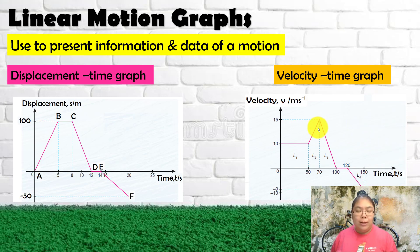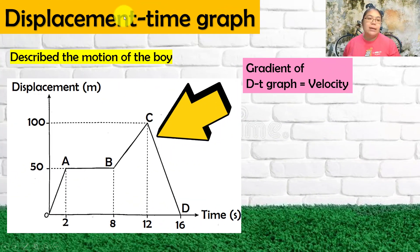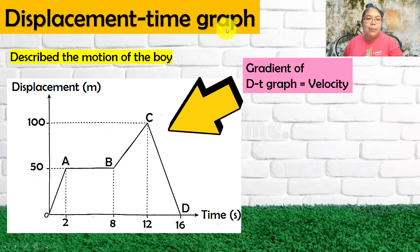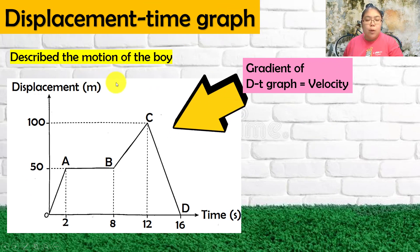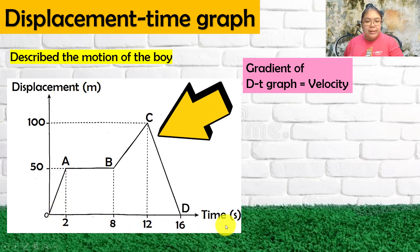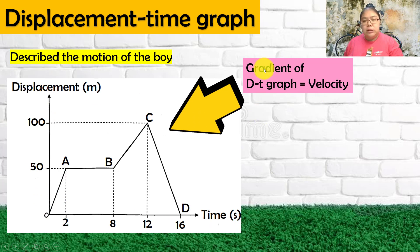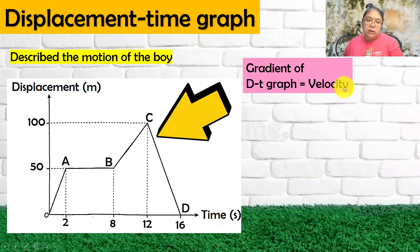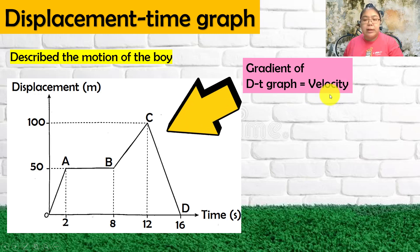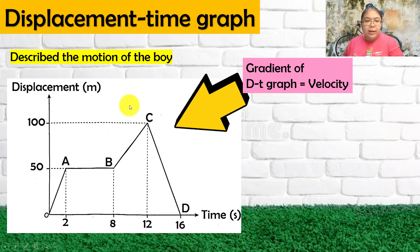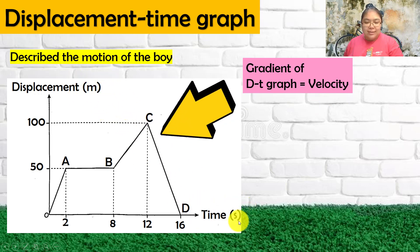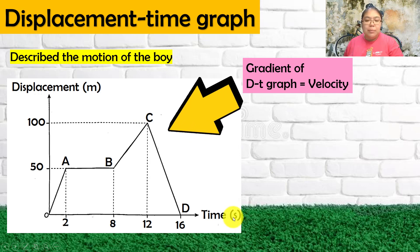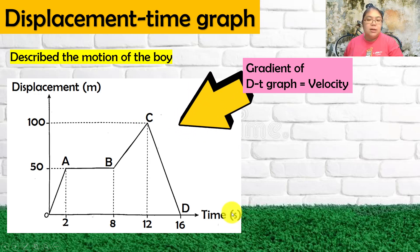Now we go through them one by one. For the displacement-time graph, I want to describe the motion of the boy. One important piece of information: the gradient of the DT graph is velocity. We know this because when you calculate the gradient, you take y over x — y is in meters, x is in seconds — so meters per second, which is velocity.